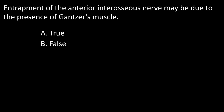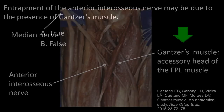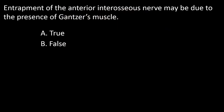Next question: entrapment of the anterior interosseous nerve may be due to the Gantzer muscle. A: true, B: false. This picture illustrates the Gantzer muscle — which refers to the accessory head of the flexor pollicis longus. This muscle can cause entrapment of the anterior interosseous nerve. So the answer is true.